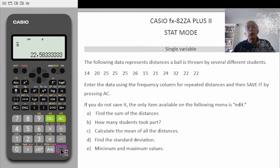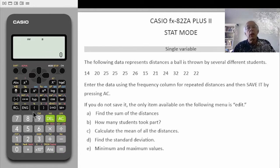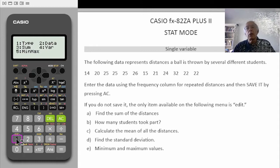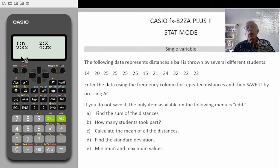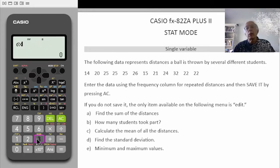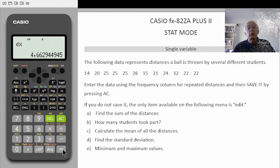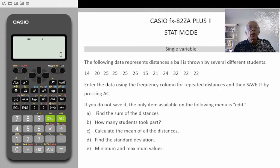Number d: find the standard deviation. Shift, stat — it is a variable so we select 4, and the standard deviation is number 3. Equals, and there is our standard deviation. Clear the screen.